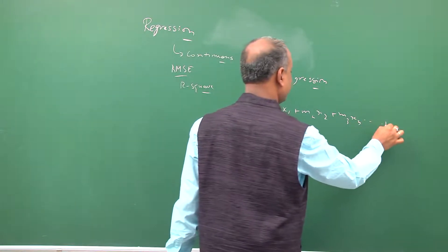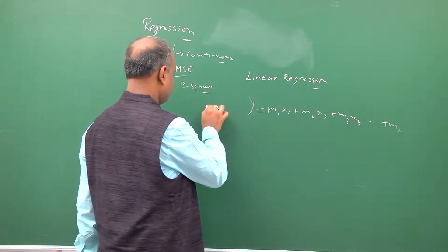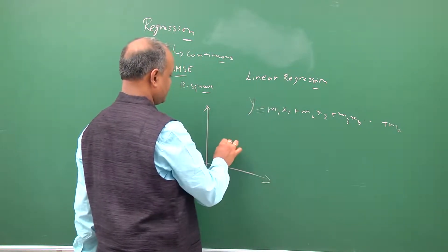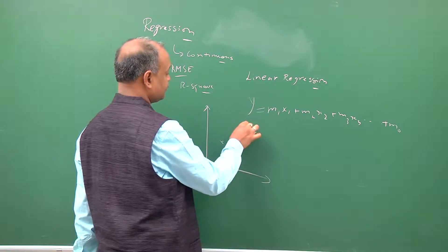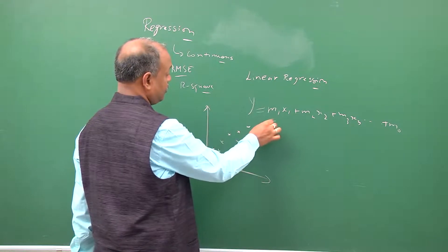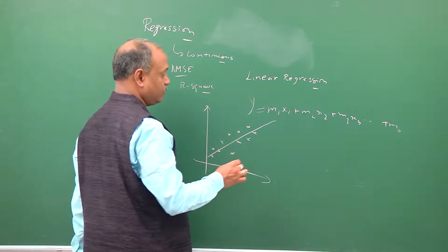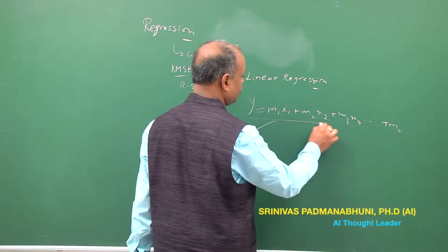The basic idea is if you have a set of data points, you can approximate it with a straight line. The idea is you feel that straight line is good enough to capture the data present in this.